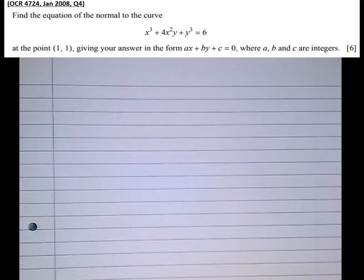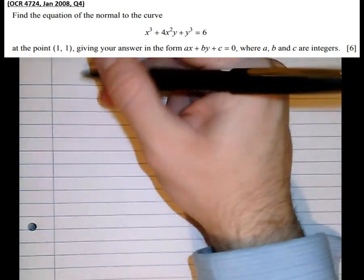Find the equation of the normal to the curve x³ + 4x²y + y³ = 6. Now in these questions, what I will always do is scan the function for products because it's going to save us a lot of work in the long run if we do the product rule first. I can see that 4x²y is the product of two functions, so I'm going to need to use the product rule for that.